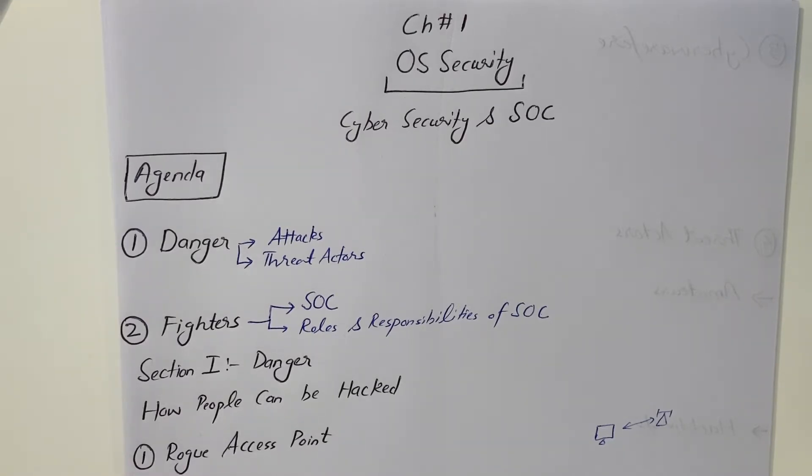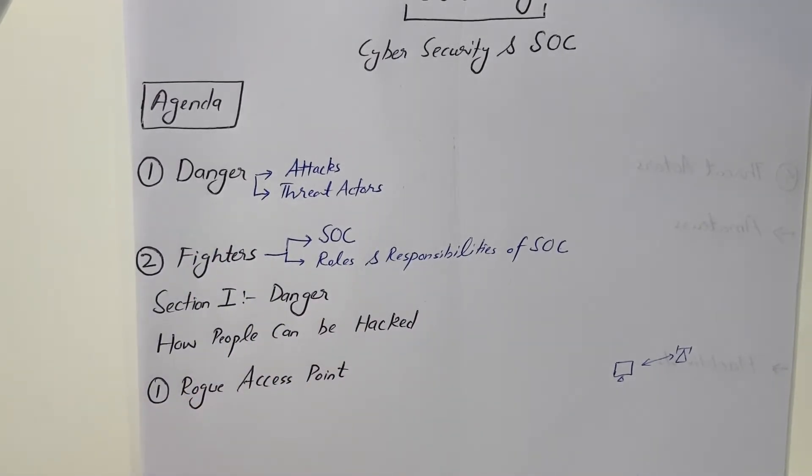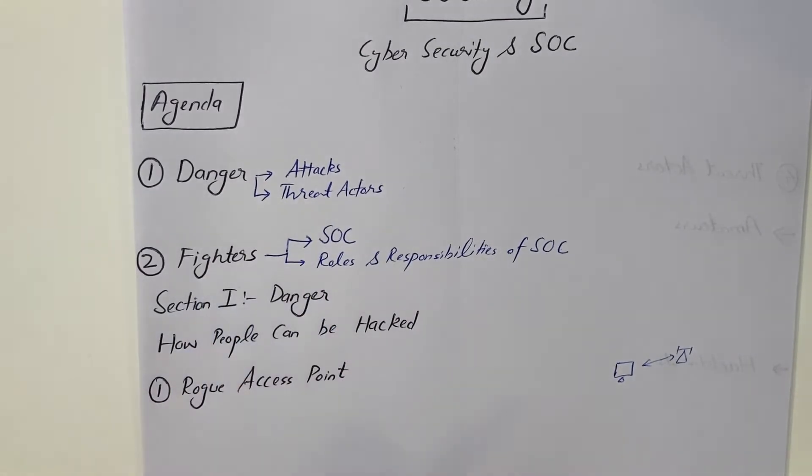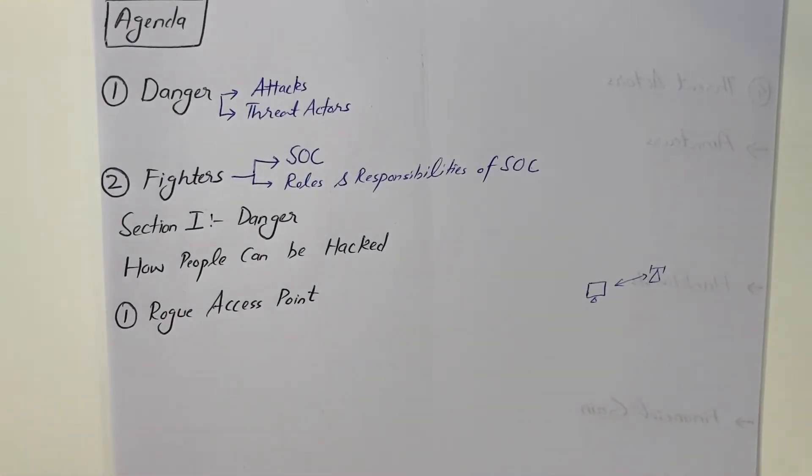Let's start with Chapter 1. Chapter 1 is about cybersecurity introduction and the role of security operations center. We have two main agenda items in this chapter. First is the danger. We will discuss different types of attacks and different types of threat actors. Then Section 2 is about fighters, how we can actually avoid the cyber attacks and threats.